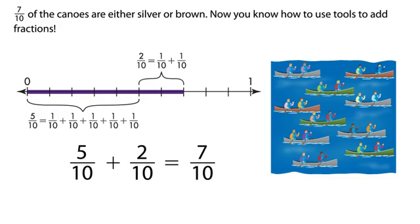Seven-tenths of the canoes are either silver or brown. Now you know how to use tools to add fractions.